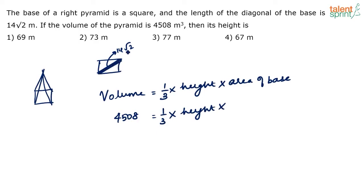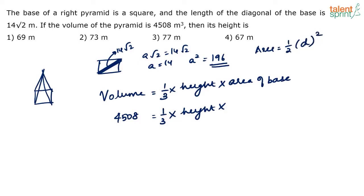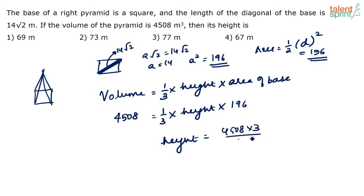If the diagonal is 14√2, then a√2 = 14√2, so a = 14, giving area = 14 × 14 = 196. Alternatively, area of a square = (1/2) × diagonal² = (1/2) × (14√2)² = 196. So 4508 = (1/3) × height × 196, which gives height = (4508 × 3) / 196 = 69 meters. That is option one.